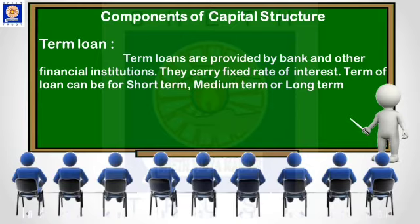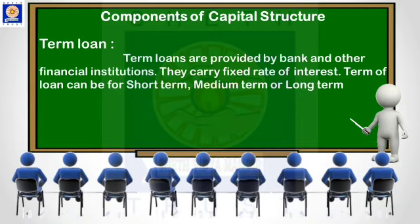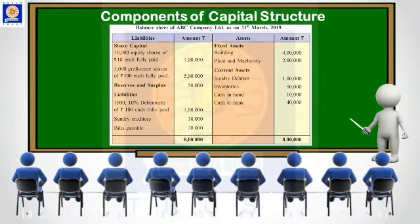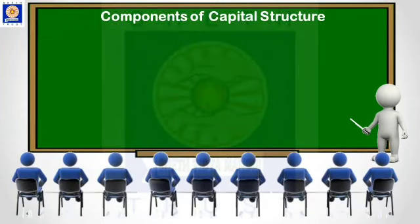In this video lecture, through capital structure, I have given you a short briefing about the various securities through which a company can raise capital — like equity shares, preference shares, retained earnings, debentures, and term loans. In the second chapter, all these securities will be explained in detail as sources of finance. Capital structure is a composition of these securities. As you can see in this balance sheet, all sources of capital are shown there, and every firm has different sources of capital. All these different sources together are called capital structure.